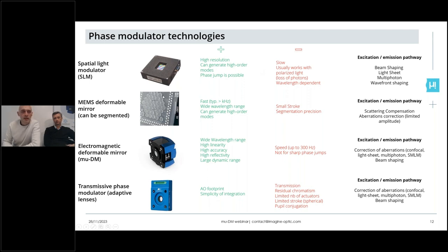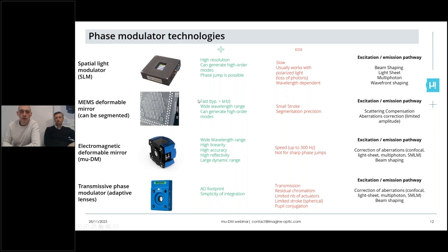MEMS deformable mirrors are interesting for their speed — they can go up to more than 1 kilohertz — which is very interesting for applications requiring fast wavefront changes, such as astronomy. They also have a lot of actuators and can generate very high-order modes. However, due to the technology, the amplitude of wavefront they can generate is usually pretty small. For segmented mirrors, there are also residual diffraction effects to deal with.